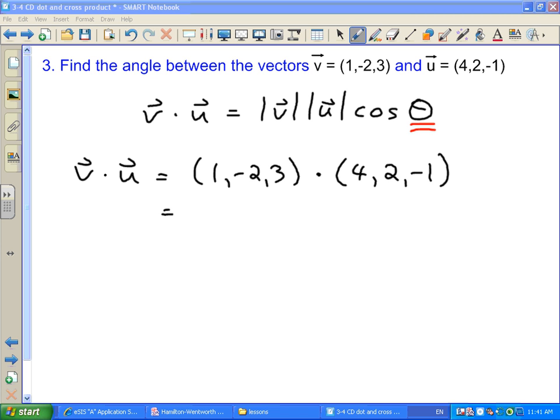And we remember how we took that dot product. We just multiplied our x components together, so 1 times 4 plus negative 2 times 2, our 2y components multiplied together, plus 3 times negative 1, our 2z components multiplied together. And then we work out what all this stuff is: 4, minus 4, minus 3, and we end up with our dot product is negative 3. It's a scalar, just like we expect to get. So that takes care of the left-hand side of the equation.